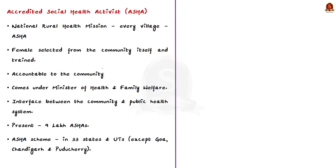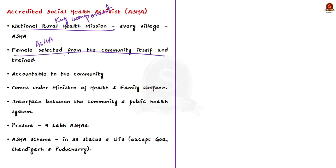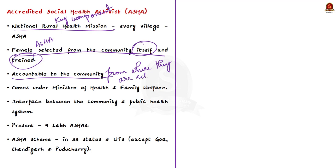One key component of the National Rural Health Mission is to provide every village with a trained female community health activist called ASHA — Accredited Social Health Activist. These female community health activists are selected from the community itself and trained. ASHA workers are accountable to the community from where they are selected, and they come under the Ministry of Health and Family Welfare.